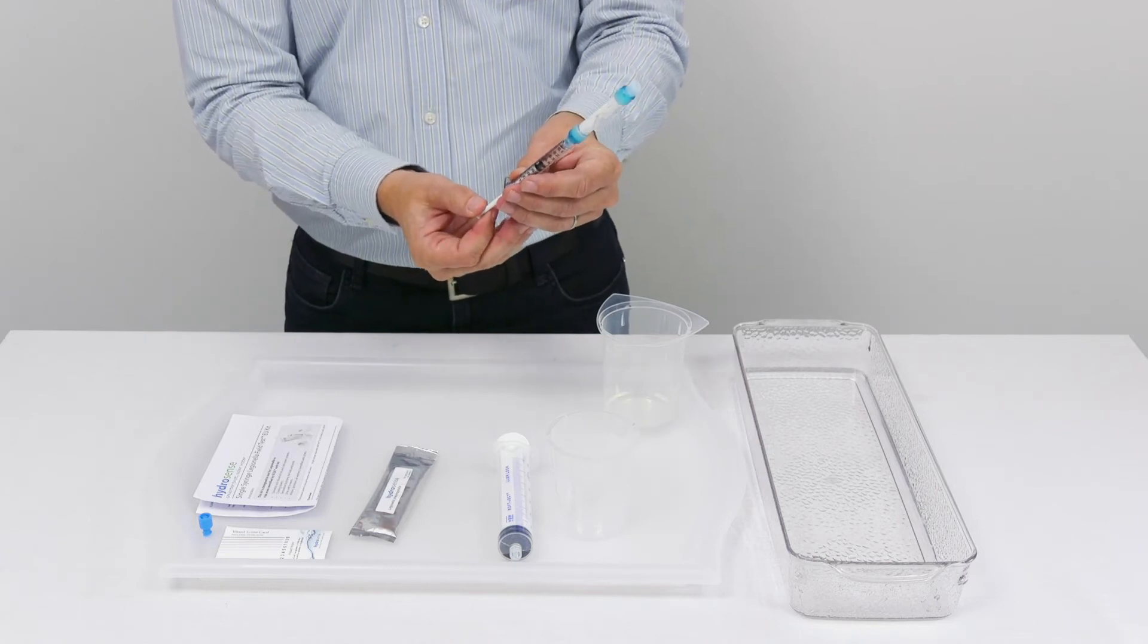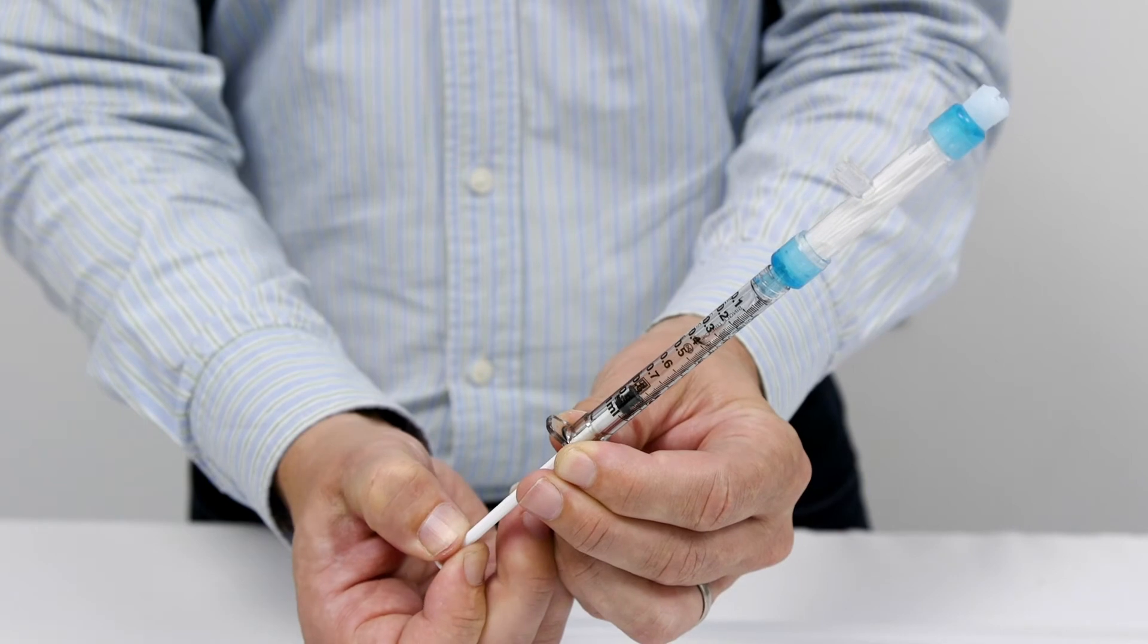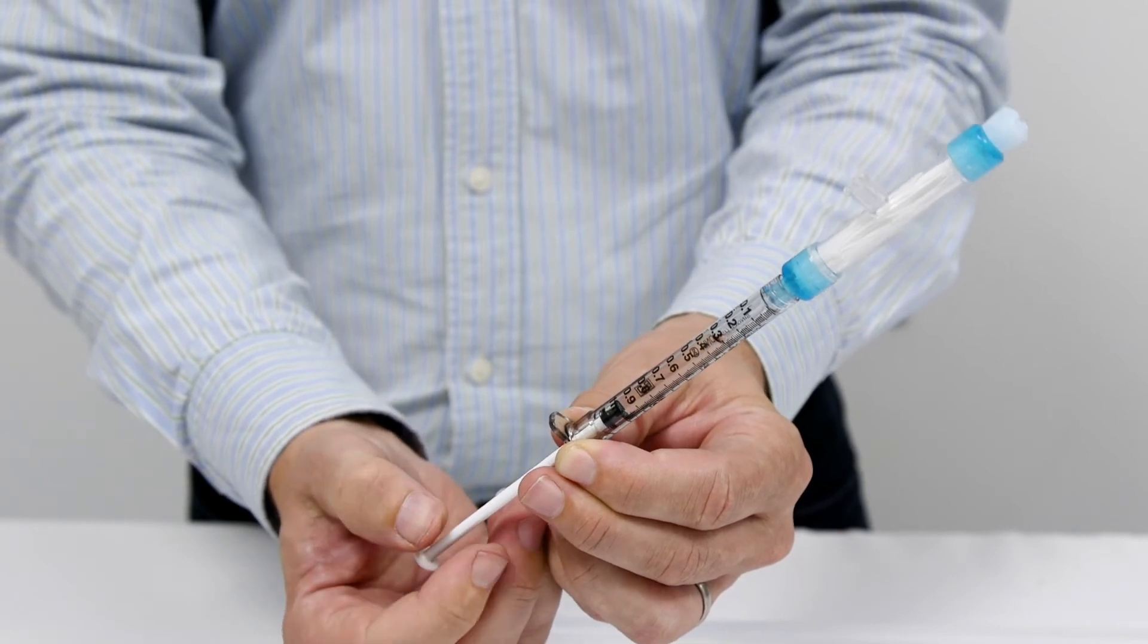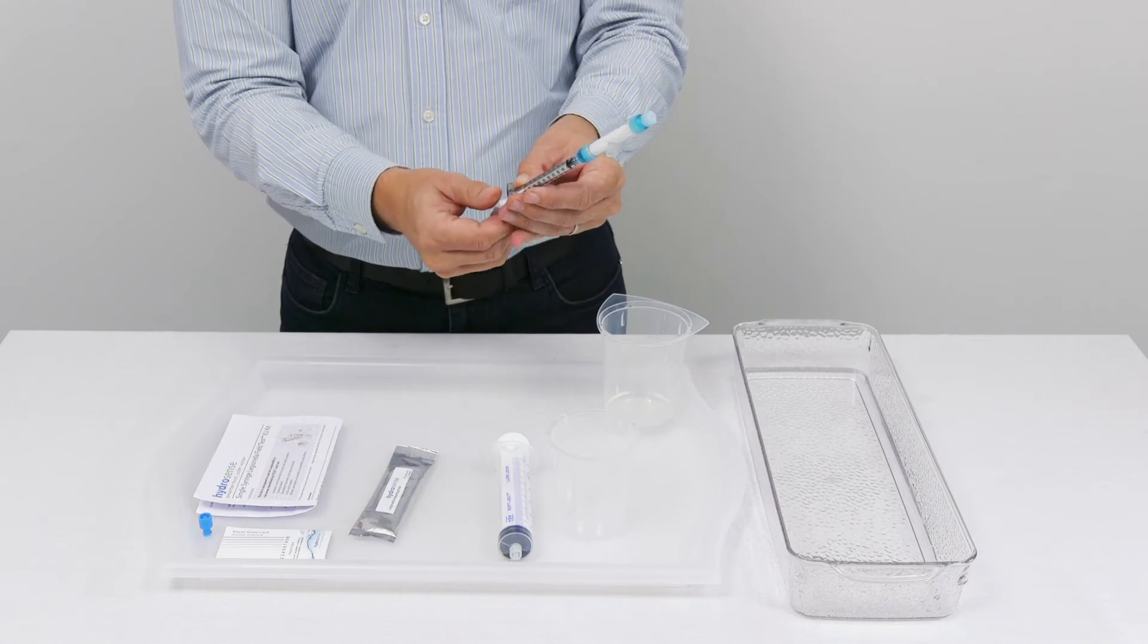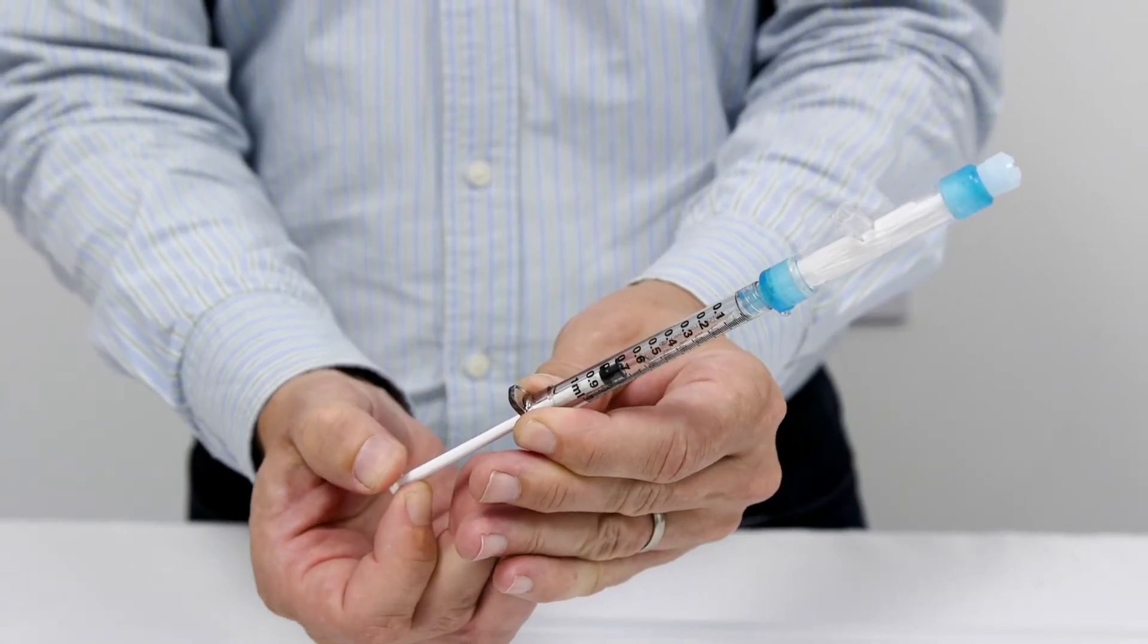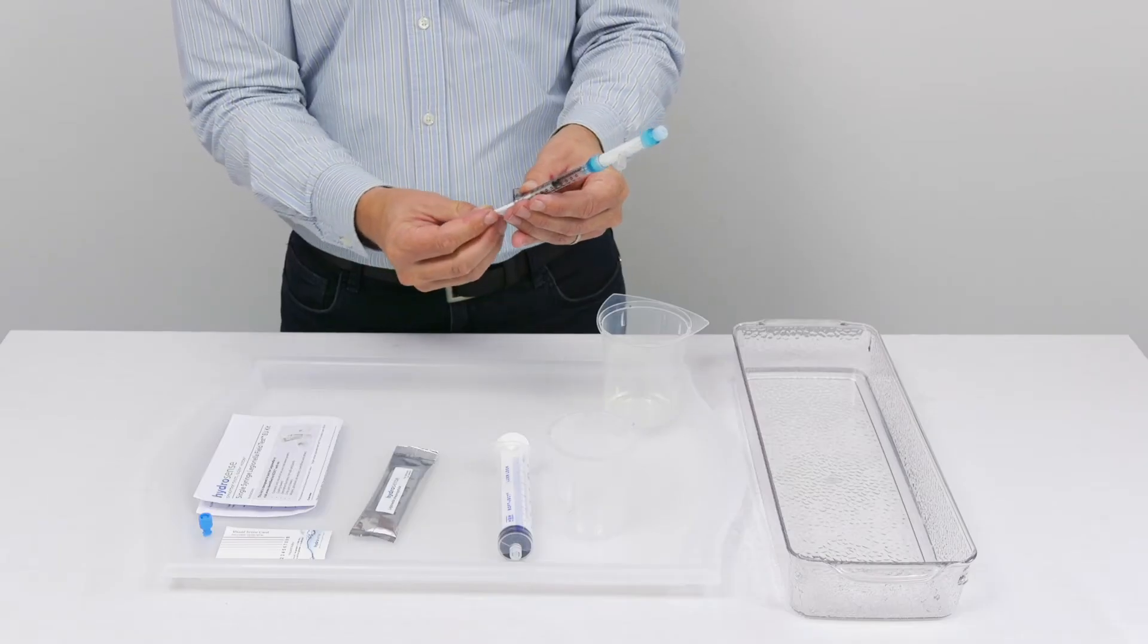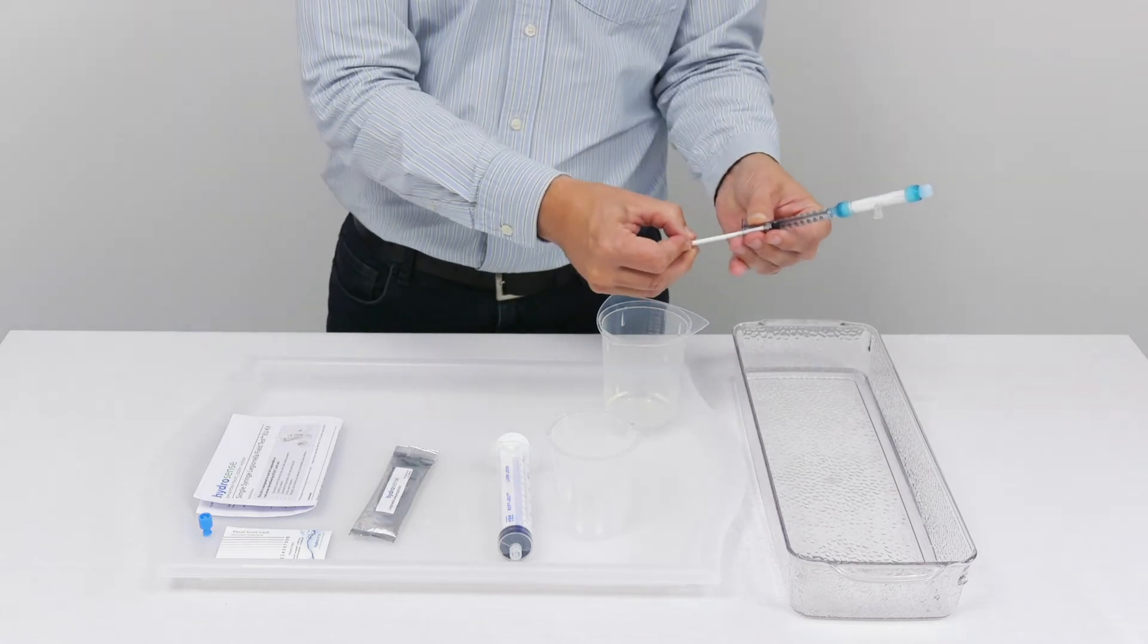The first step is to pull the plunger back to the one milliliter mark on the syringe right at the bottom and then push it into the sample. We then pull back to the one milliliter mark and then push in, and repeat this three times.